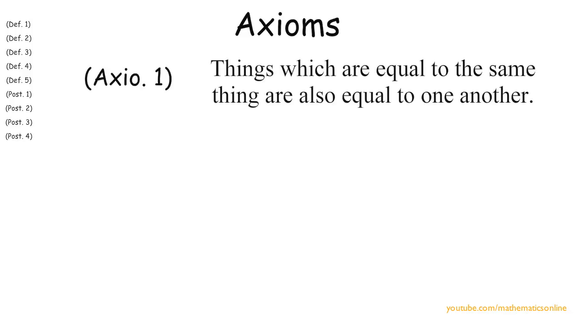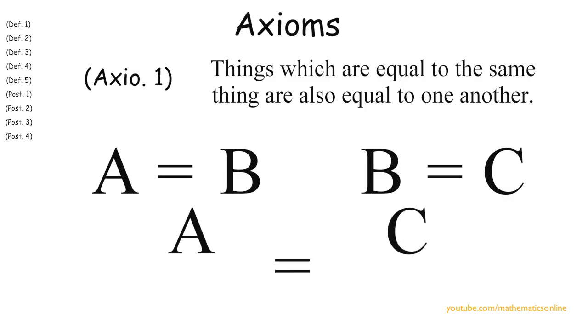So our first axiom is, things which are equal to the same thing are also equal to one another. An easy way to represent this is if A is equal to B, and B is equal to C, then A is equal to C.